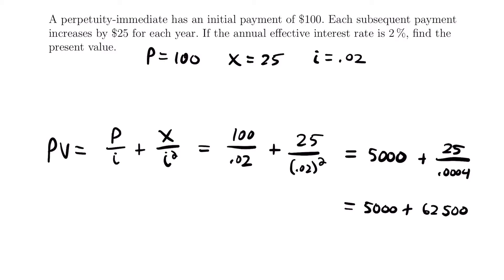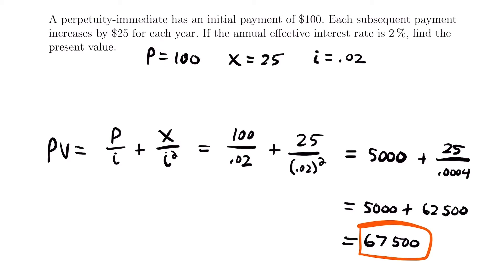25 divided by 0.0004 is 62,500. So the present value equals 5,000 plus 62,500, which equals $67,500. This is the present value of the perpetuity with an arithmetic increasing progression. Let's look at a different example.